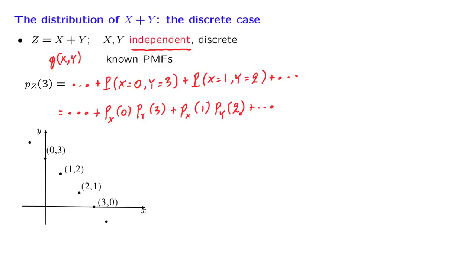Now, let us generalize. In the general case, the probability that the sum takes on a particular value, little z, can be calculated as follows. We look at all the different ways that the sum of little z can be obtained. One way is that the random variable x takes on a specific value, little x, and at the same time, the random variable y takes the value that's needed so that the sum of the two is equal to little z.